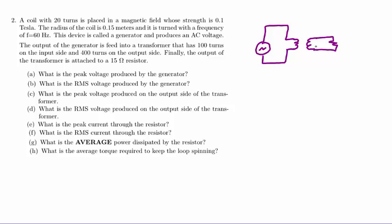First we'll talk about the characteristics of the generator. A coil with 20 turns is placed in a magnetic field whose strength is 0.1 tesla. The radius of the coil is 0.15 meters and it turns with a frequency of 60 Hertz. This device is called a generator and produces an AC voltage.